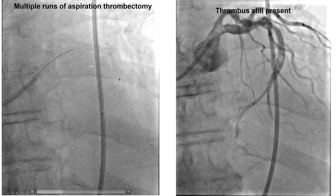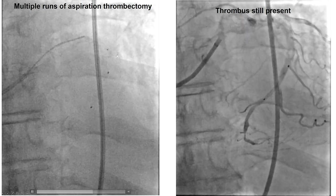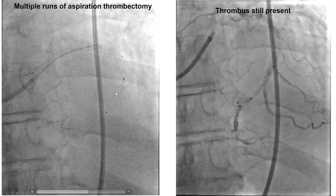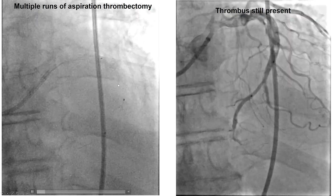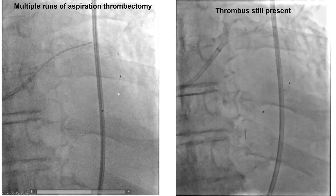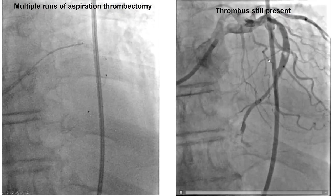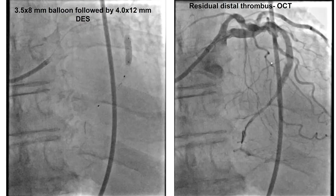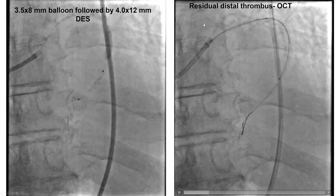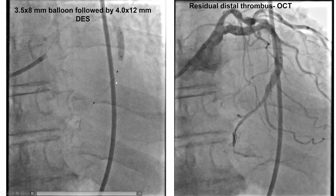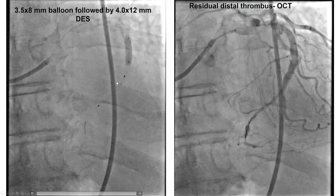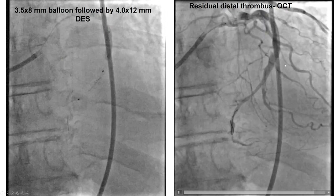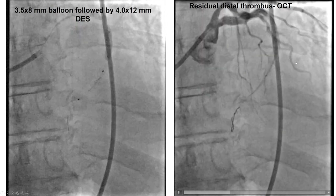One of the challenges when filters are used is that when delivery of equipment is challenging, the filter may be pulled back and can essentially go into the lesion. So it is important to constantly monitor the position of the filter wire to ensure that it doesn't move, and if it does move, to reposition it to prevent it from going through the target lesion. Despite multiple attempts, there was still a filling defect, but we decided to finally stent it, and having the filter did help protect the distal vessel at least partially from distal embolization. We did have significant improvement after delivering the stent.